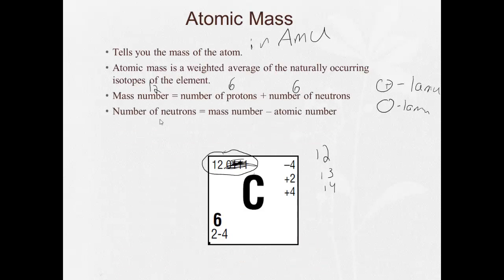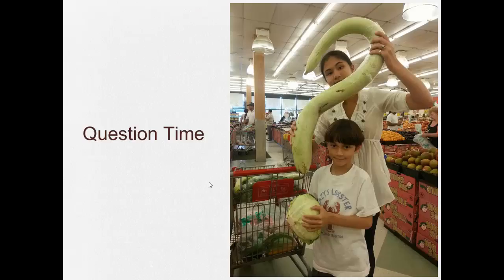A little bit of algebra. We can see that the number of neutrons is equal to the mass number minus the atomic number. So 12 minus 6 gives us 6 neutrons. We're going to have to be able to calculate this many times.